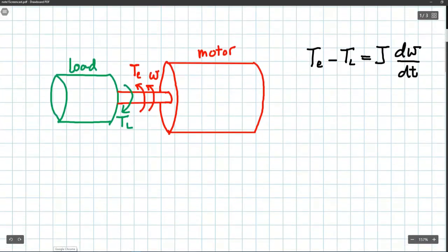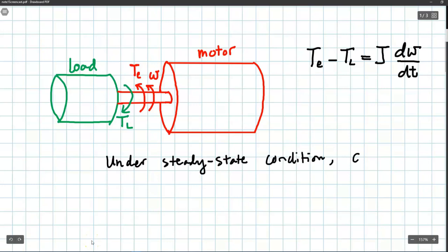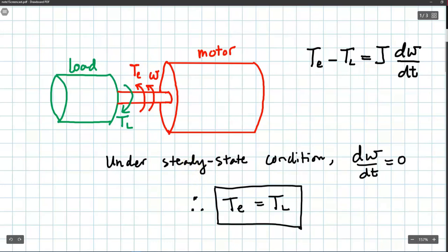For the DC motor considered in this course, the motion is rotating rather than translating. We can still apply Newton's second law for rotational motion; however, instead of force we use torque, instead of mass M we use J (the moment of inertia), and instead of translational velocity V we use angular velocity omega. So we write: Te minus TL (the net torque) equals J times the rate of change of angular velocity. Under steady state conditions where d(omega)/dt equals zero, Te must equal TL. In other words, to maintain a constant angular velocity, the motor torque must equal the load torque TL.